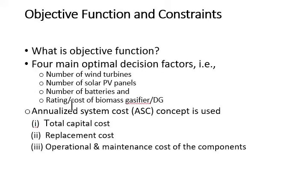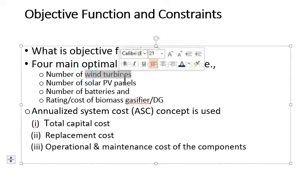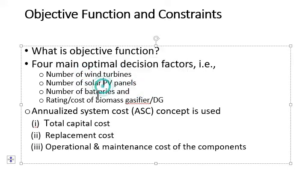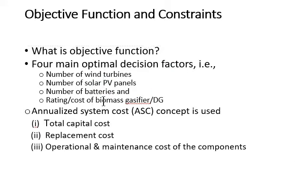For optimal configuration, four main decision factors have been selected: the number of wind turbines, solar PV panels, batteries, and rating of DG or biomass gasifier.